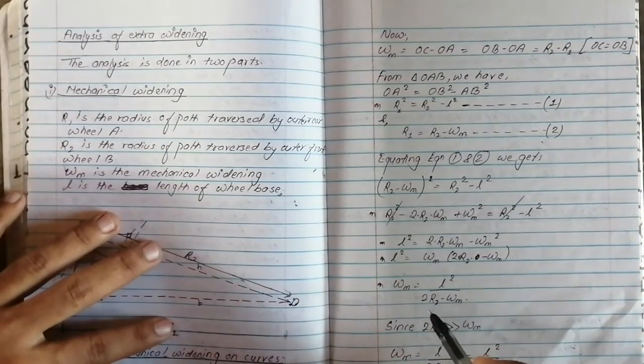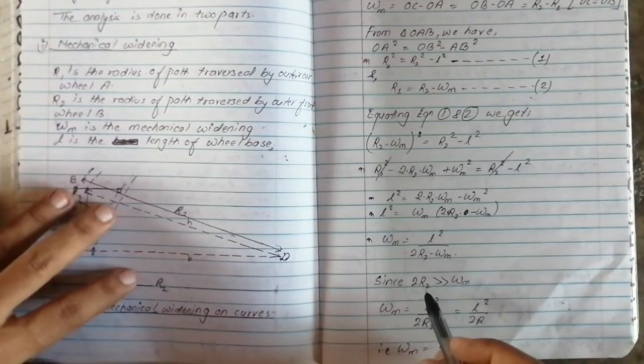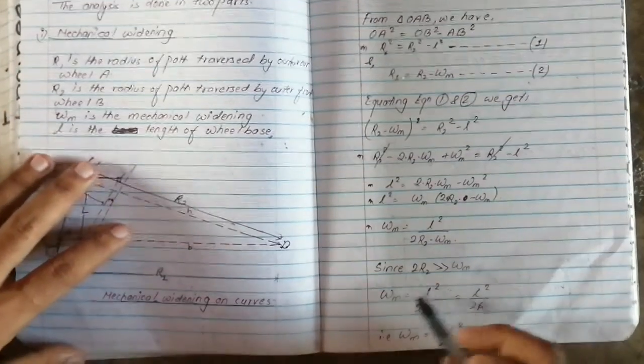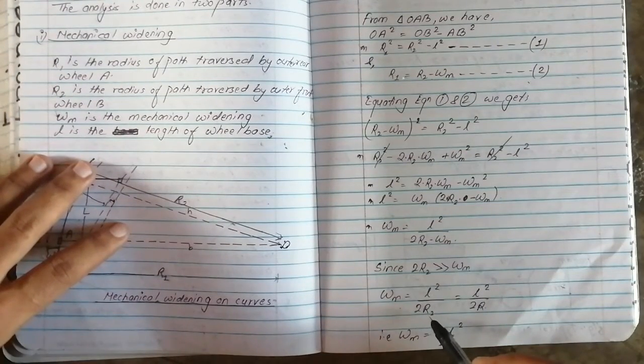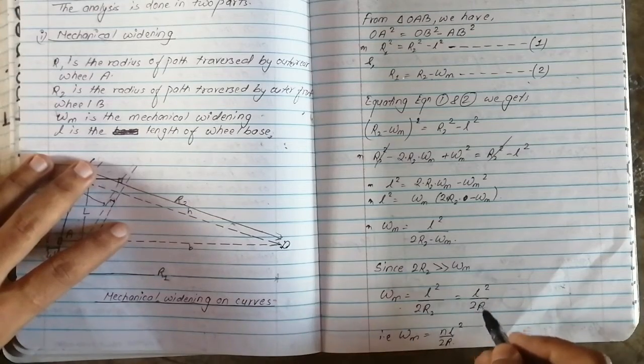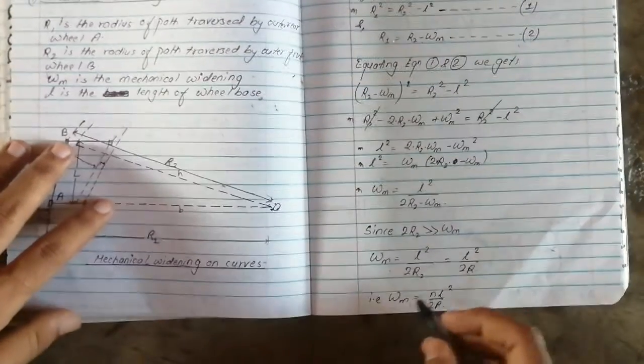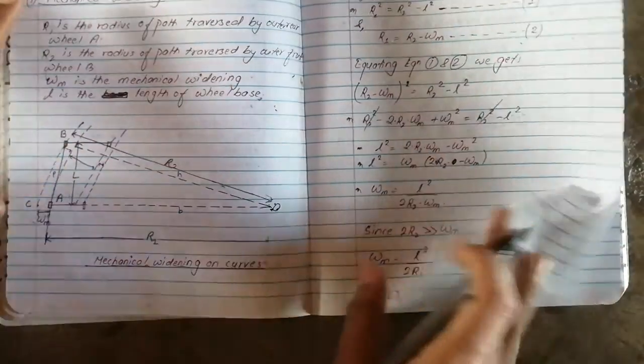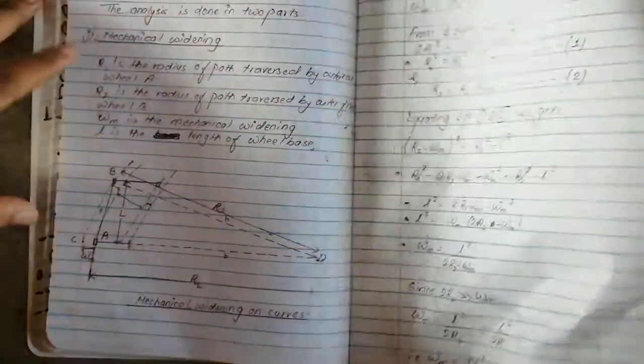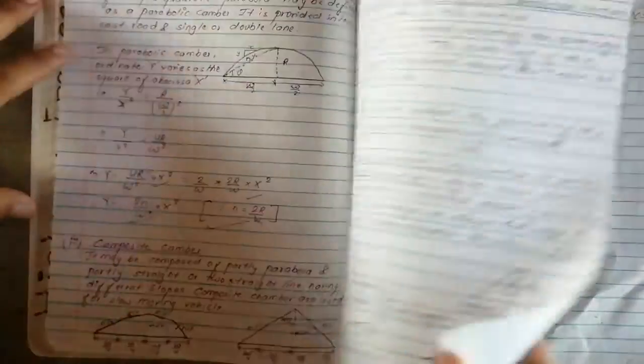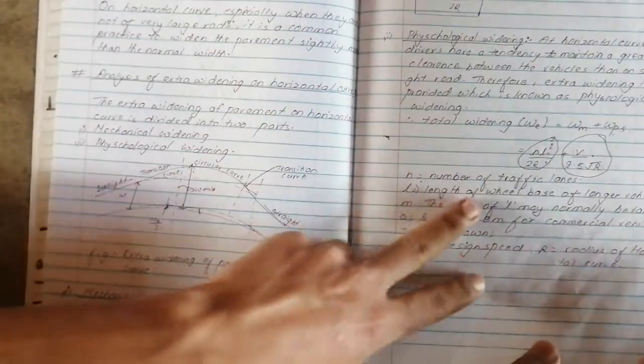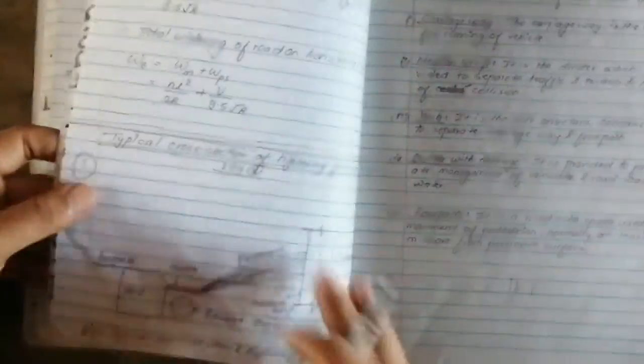WM is equal to NL square by 2R minus WM. Since 2R2 is far greater than WM, WM is equal to NL square by 2R2. This is the value of mechanical widening where N is number of traffic lanes.